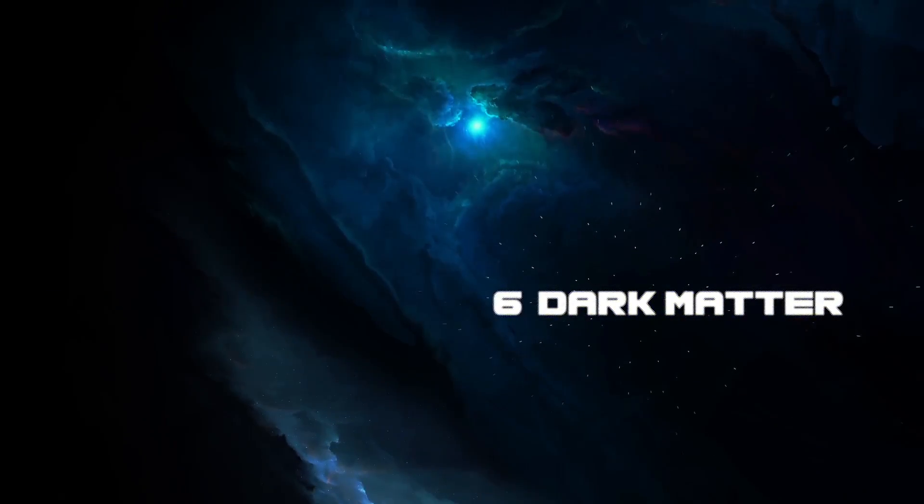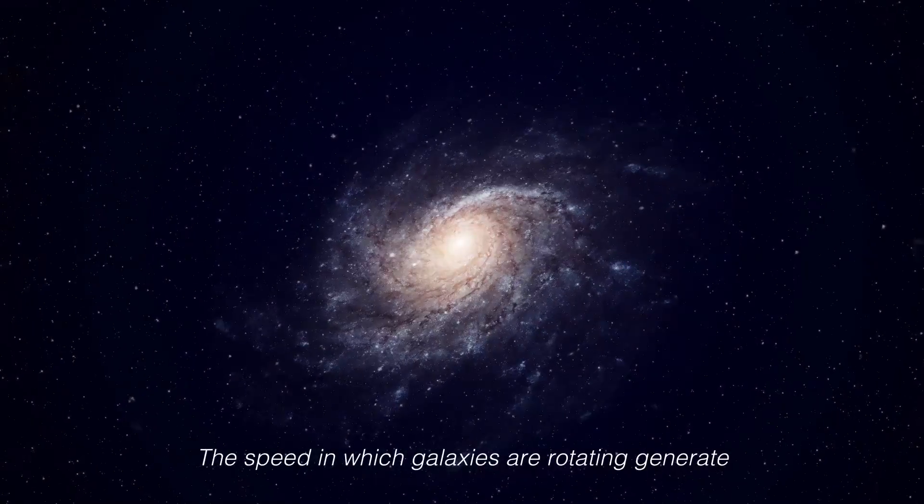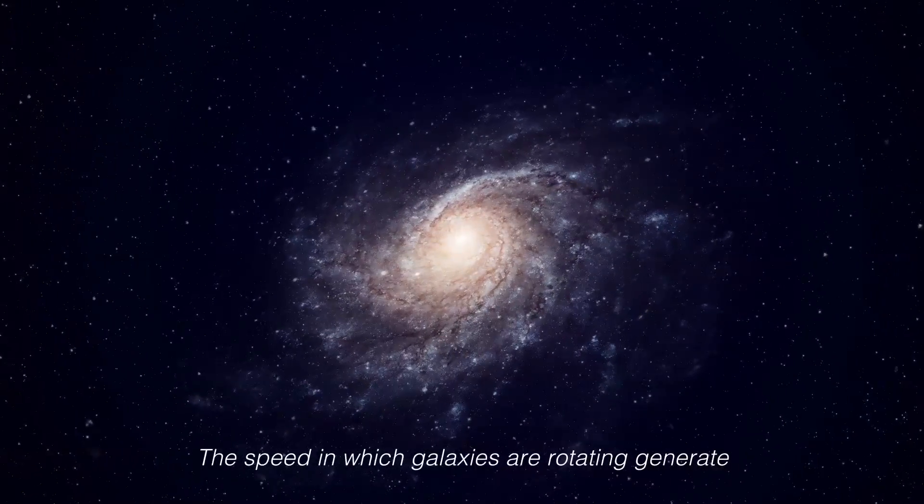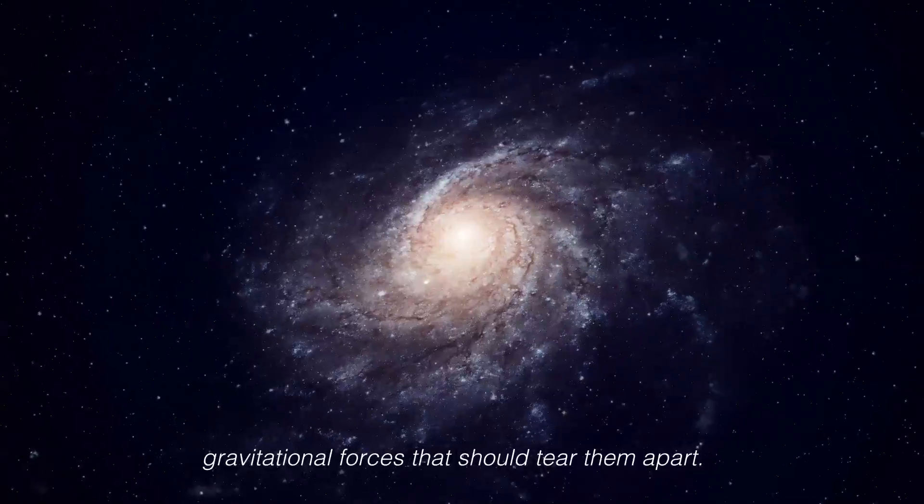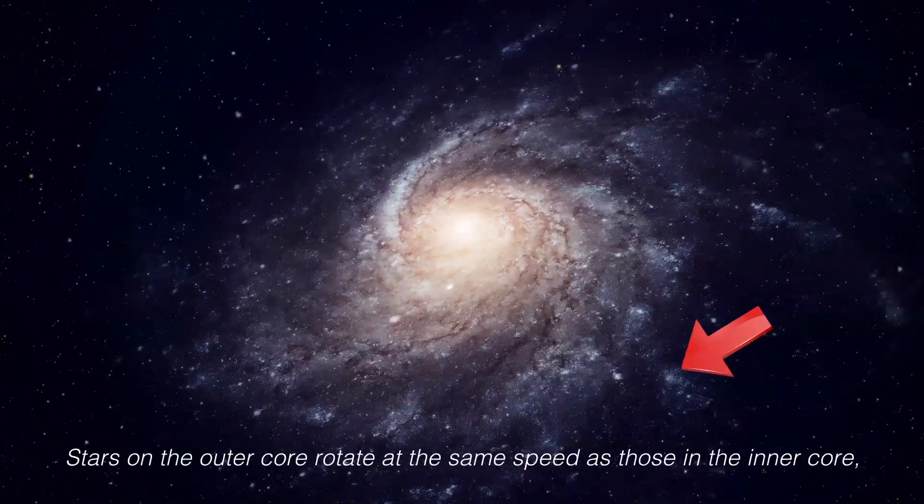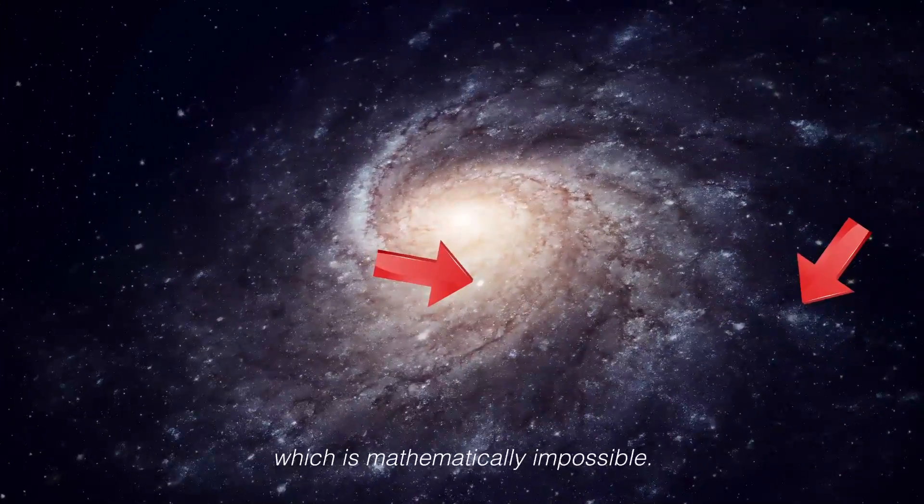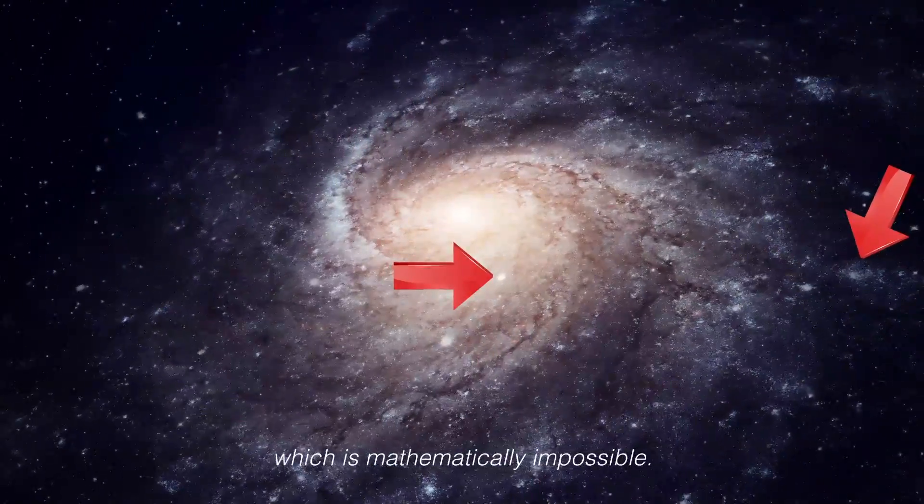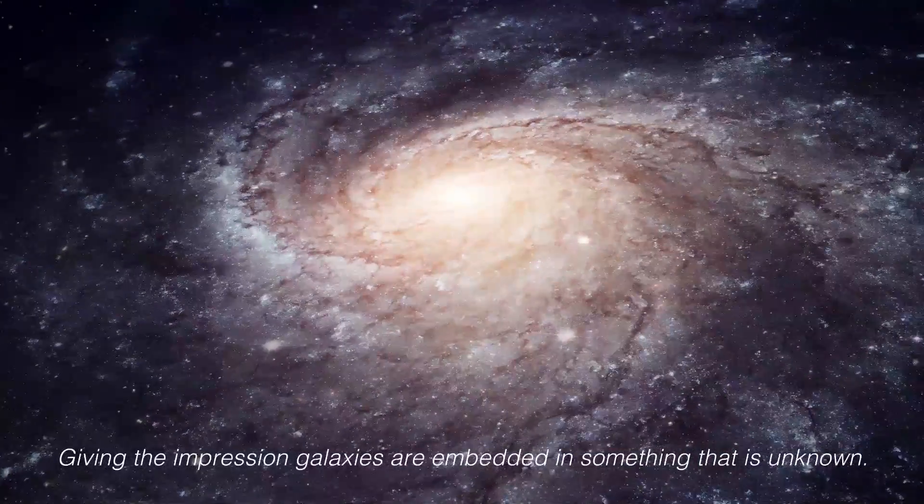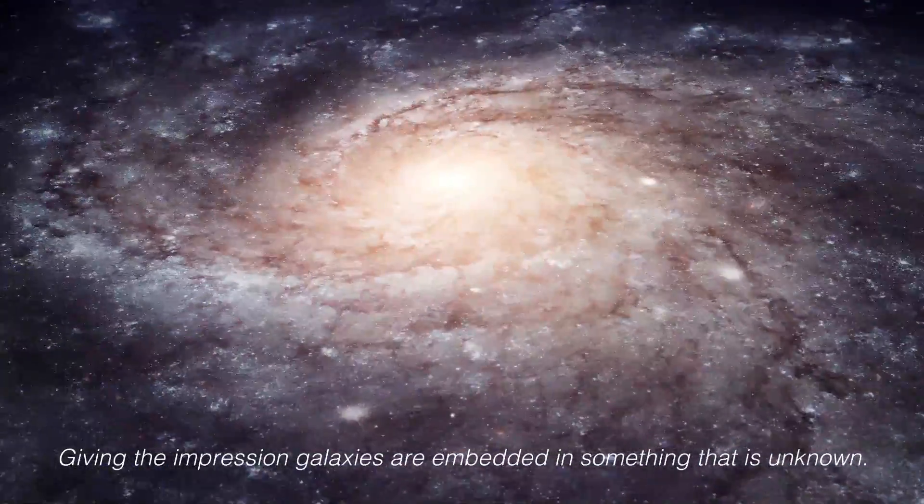Number 6: Dark Matter. The speed in which galaxies are rotating generate gravitational forces that should tear them apart. Stars on the outer core rotate at the same speed as those in the inner core, which is mathematically impossible, given the impression galaxies are embedded in something that is unknown.